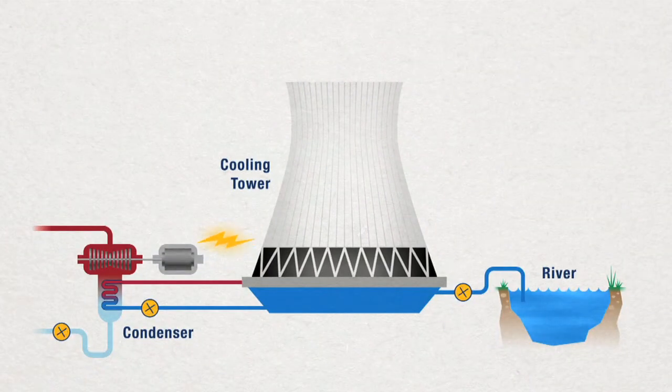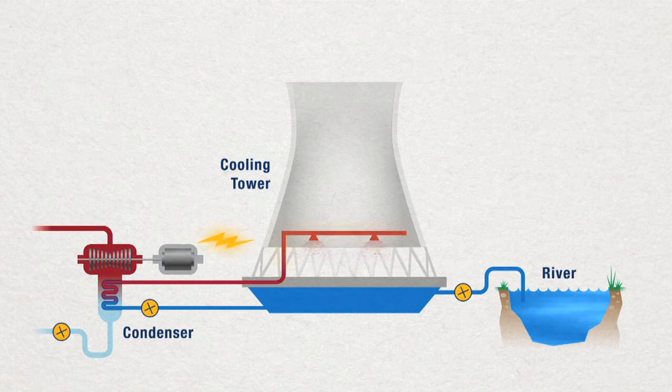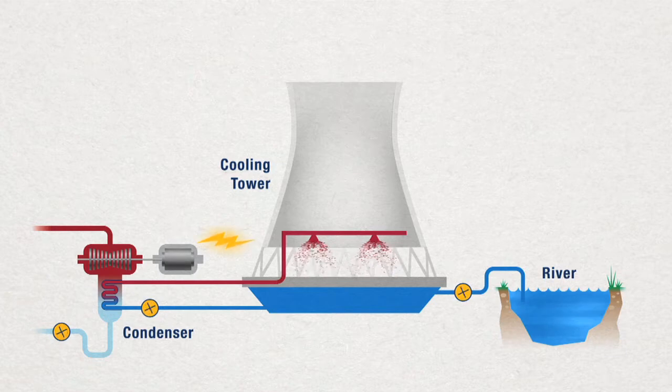Heated water from the condenser flows to the cooling tower and is distributed through pipes in the lower portion, approximately 40 feet high. The pipes contain open valves or nozzles that allow the water to fall naturally into the tower basin.